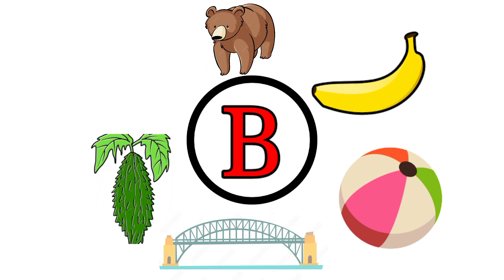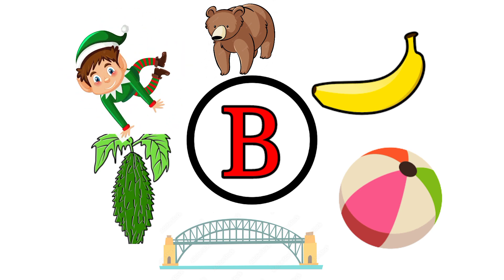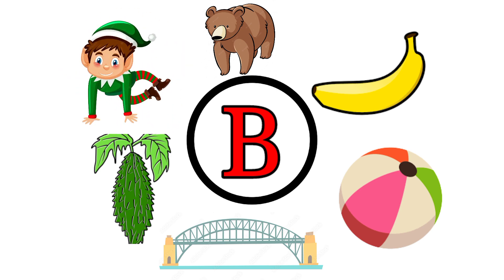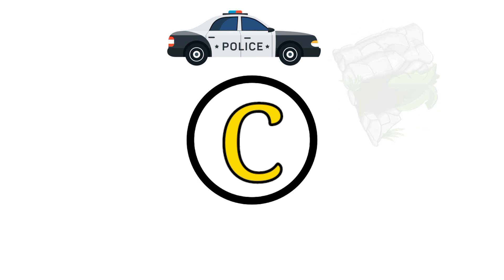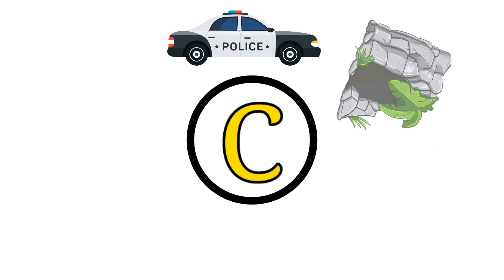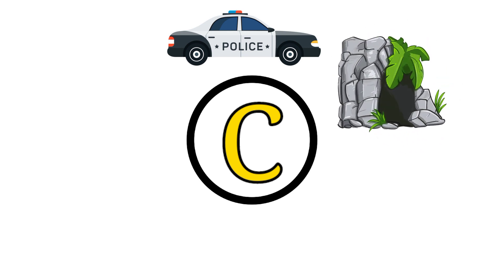B for bitter gourd. Bitter gourd means karela. B for boy. Boy means ladka. C. C for car. Car means car. C for cave. Cave means gufa.